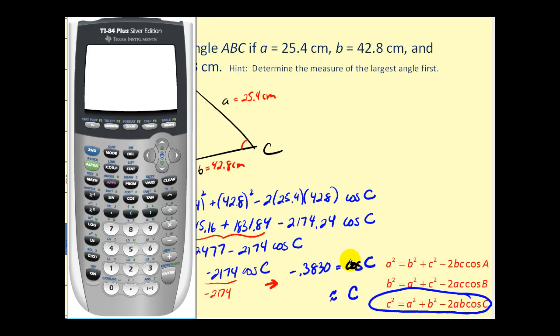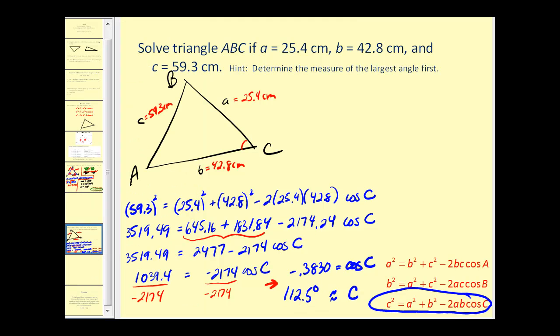We'll have negative 0.3830 equals cosine C. Now if we take inverse cosine of both sides, C is approximately equal to inverse cosine of negative 0.3830. So angle C is approximately 112.5 degrees. Let's label that.